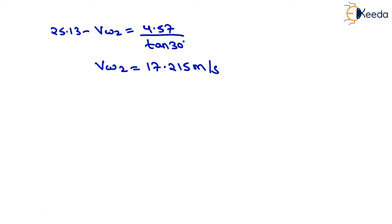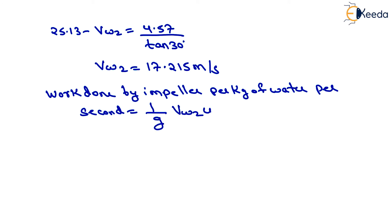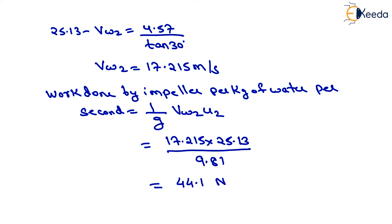Work done by the impeller per unit weight of water is given by (1/g) times vw2 times u2. Putting in the values: 17.215 times 25.13 divided by 9.81, we get the value equals 44.1 Newton-meters per Newton. That is the work done by the impeller per unit weight of water.